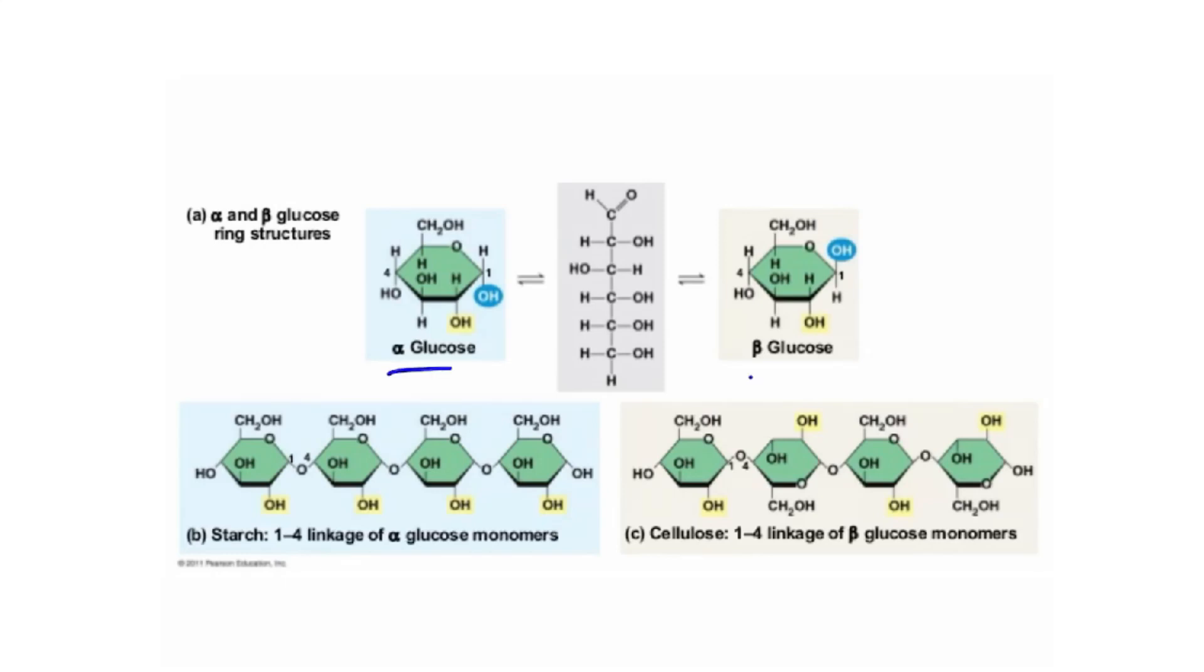Glucose, for example, has two structures, alpha and beta. Therefore, when many alpha glucose monomers link through a 1 to 4 glycosidic linkage, they form starch. However, when many beta glucose monomers link through a 1 to 4 glycosidic linkage, they form cellulose.